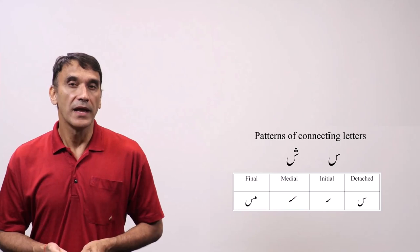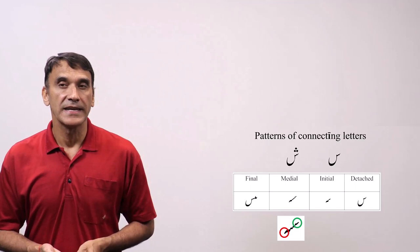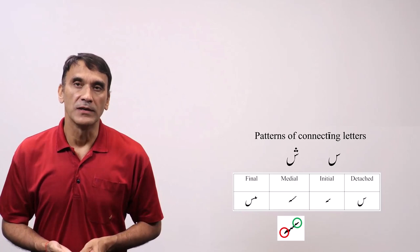The middle form looks like the initial form just connected to the previous letter on top, and the final form is similar to the detached one but attached to the previous letter on top. The green circle in this picture shows where the previous letter will be connected with seen, and the red circle shows where the following letter will be connected.